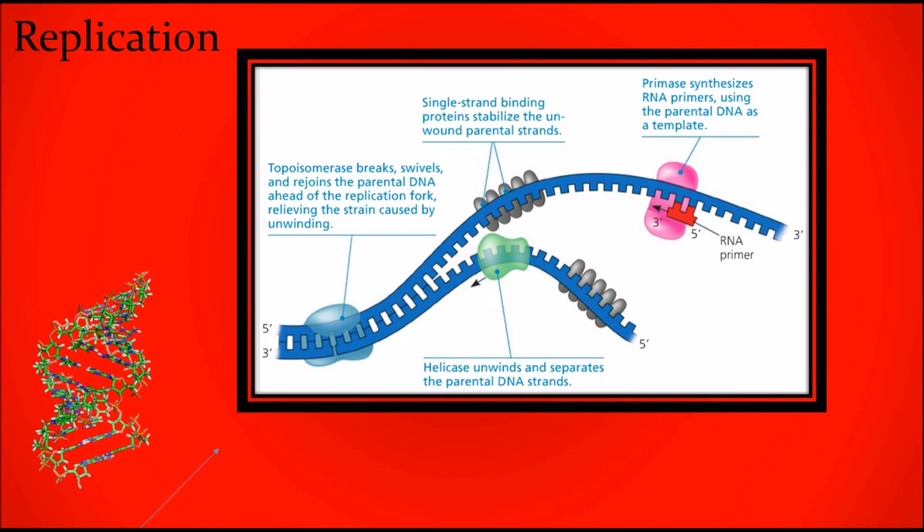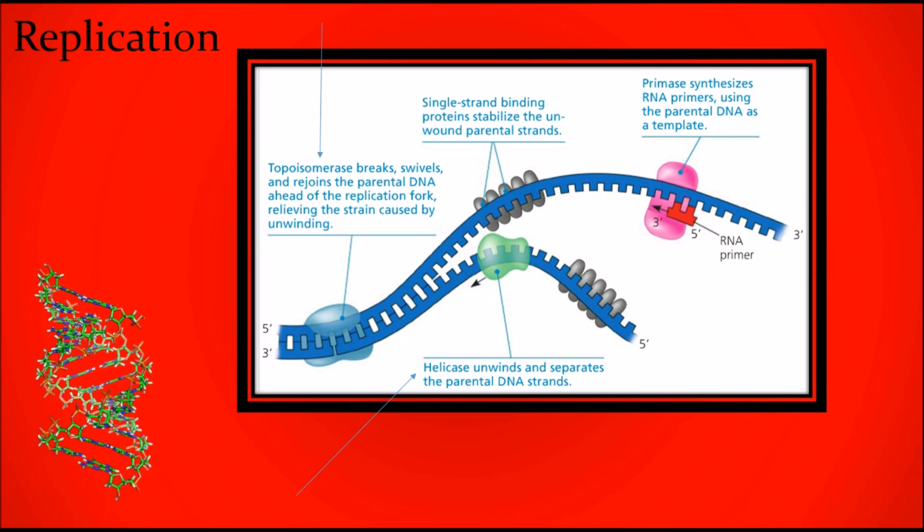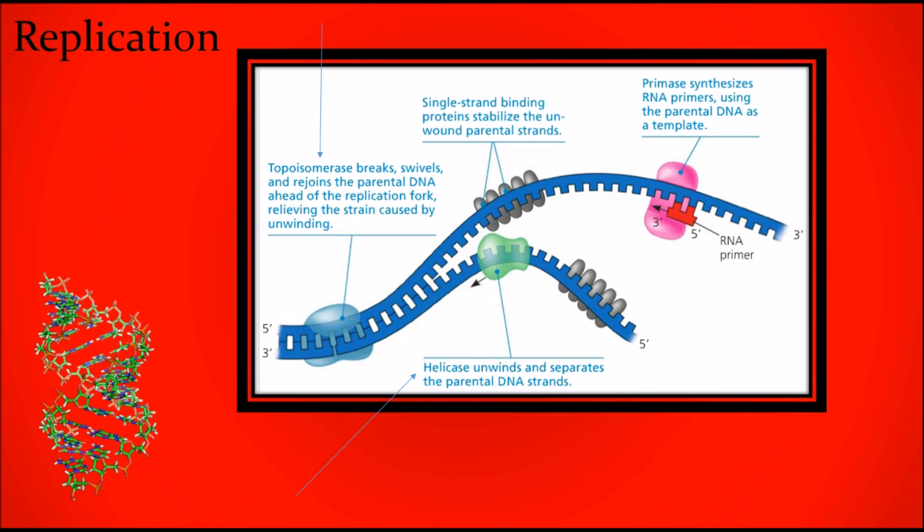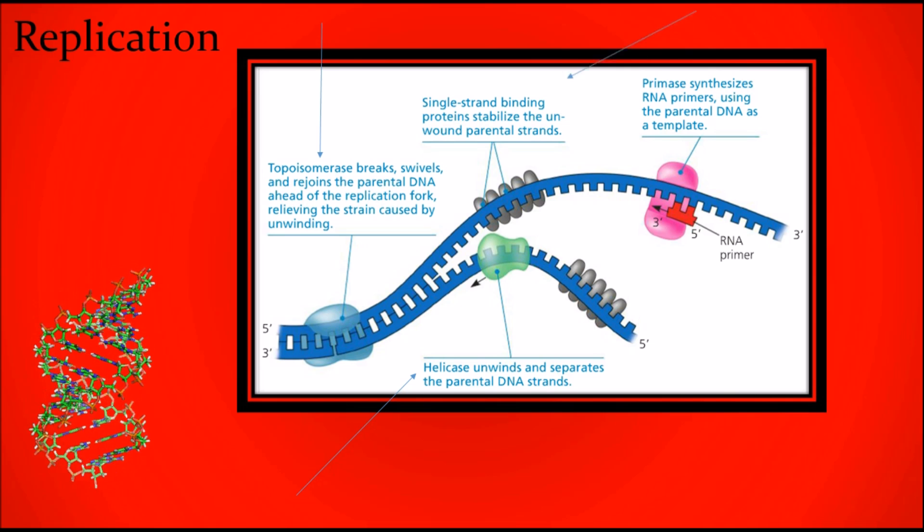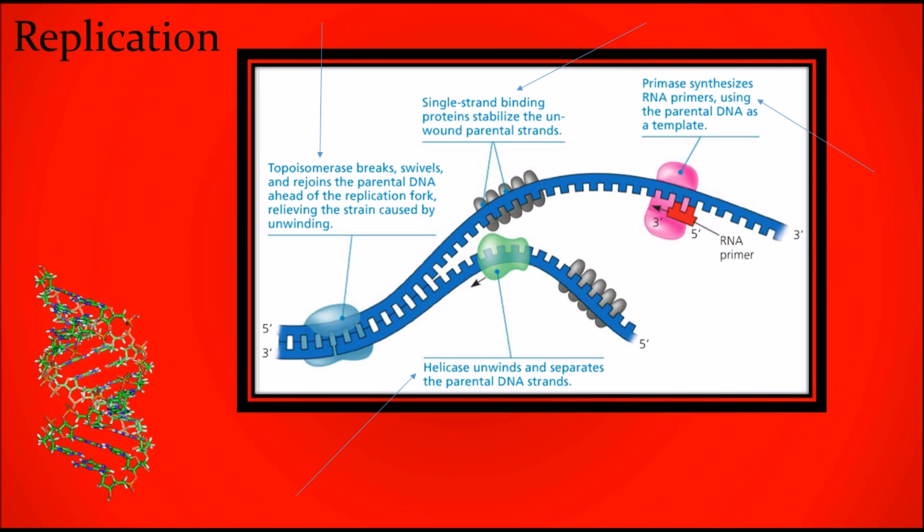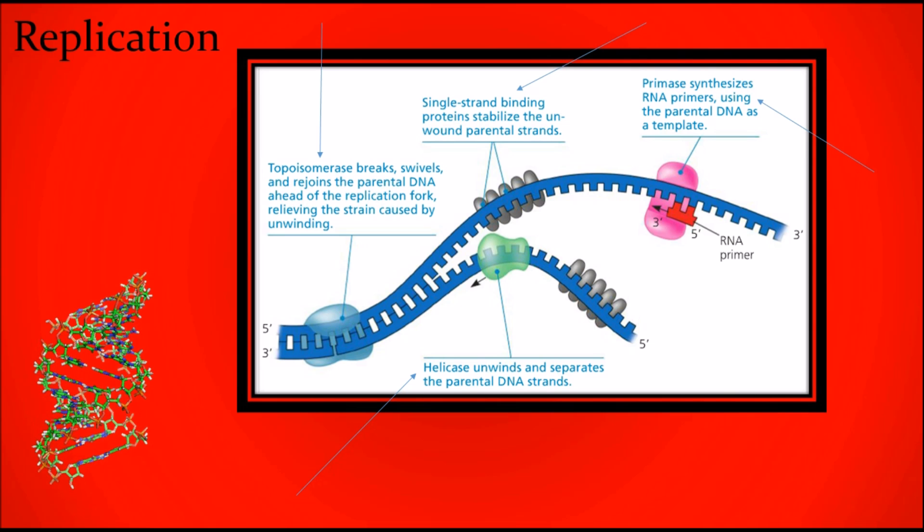Helicase unzips, topoisomerase relieves strain, and proteins help to stabilize, then primers start synthesizing new genes